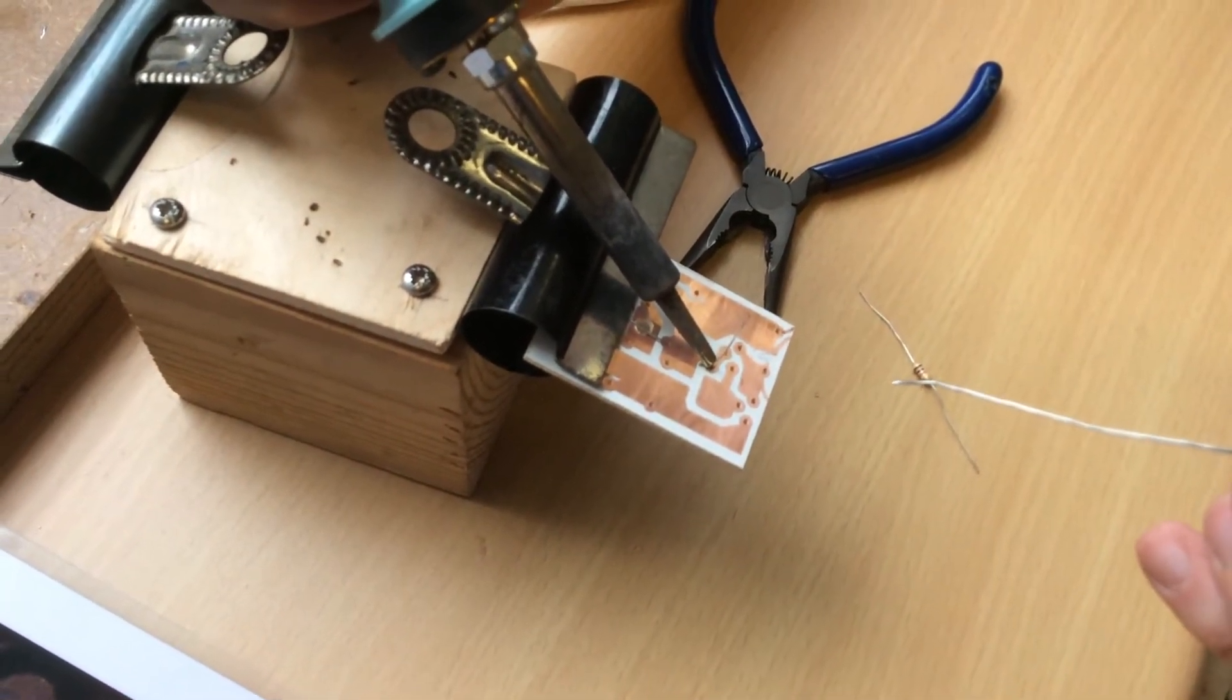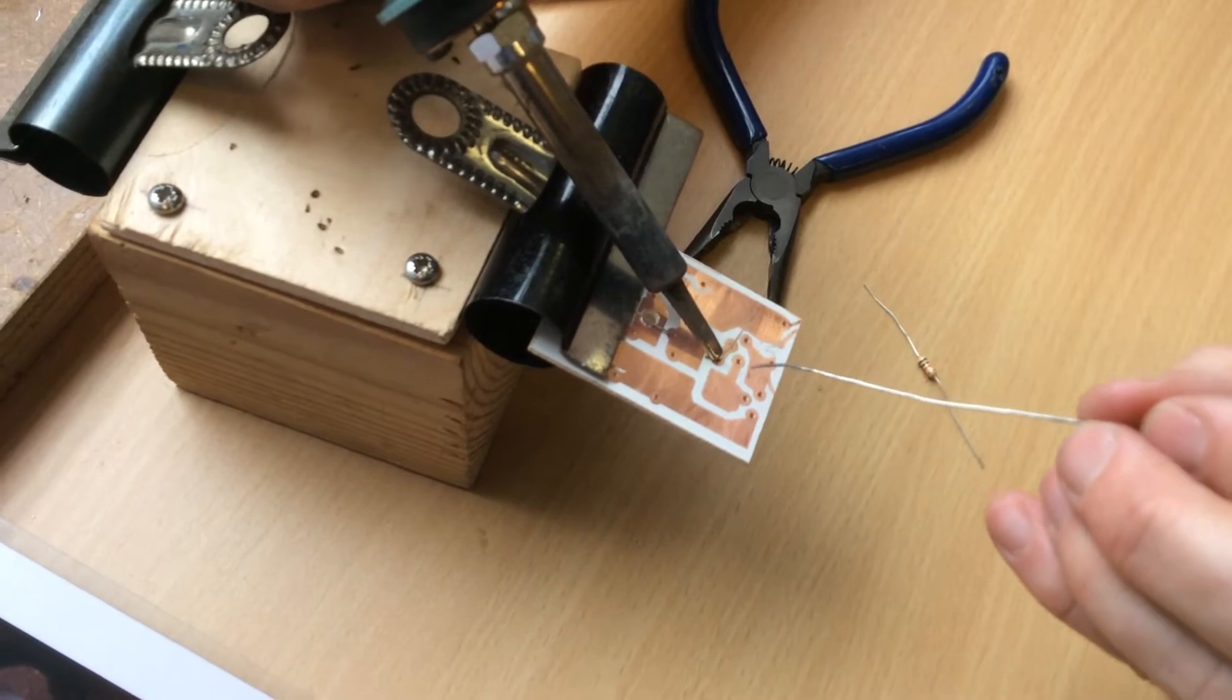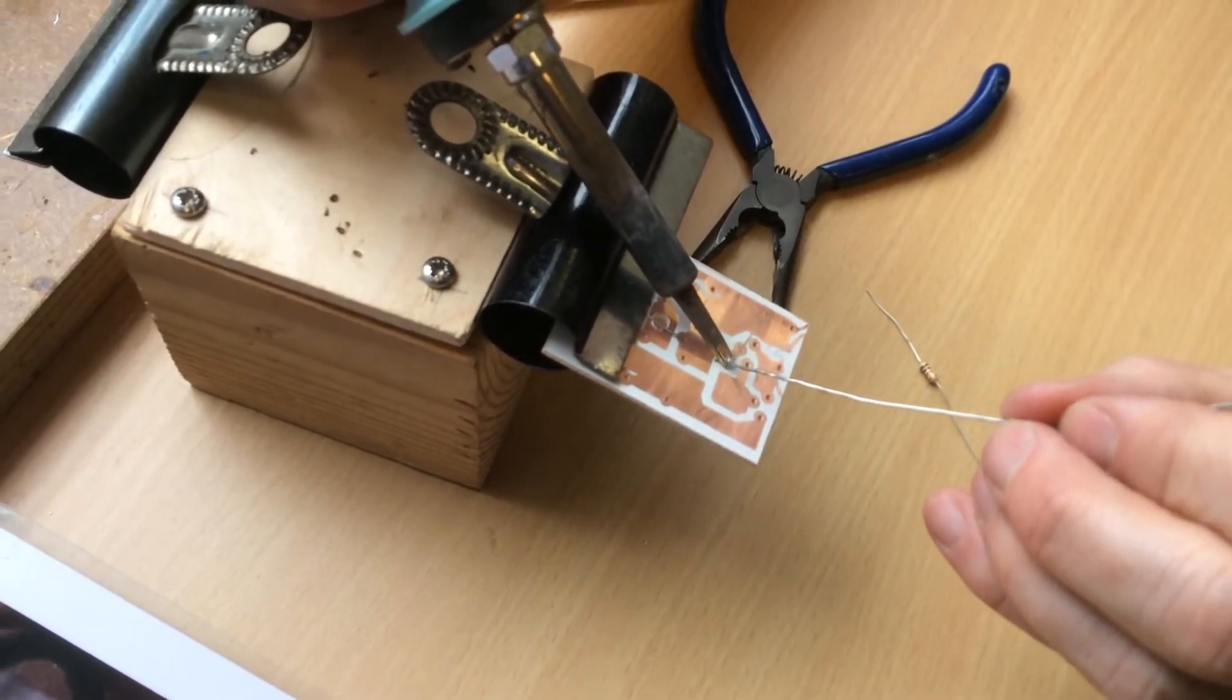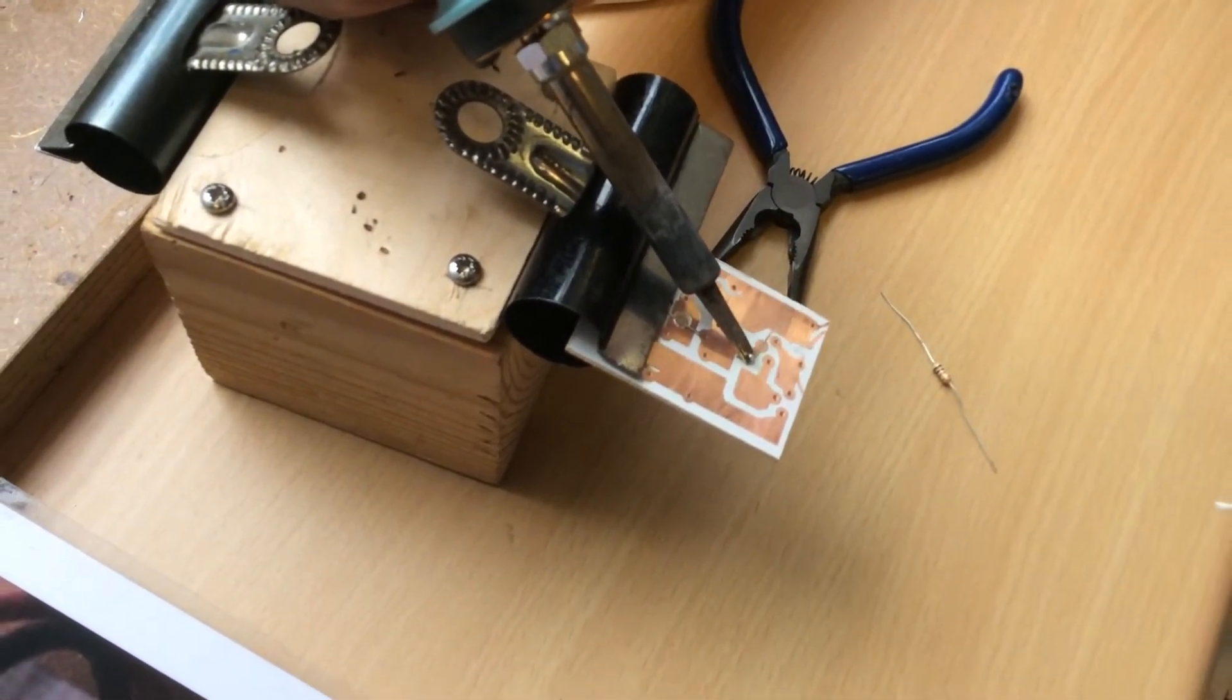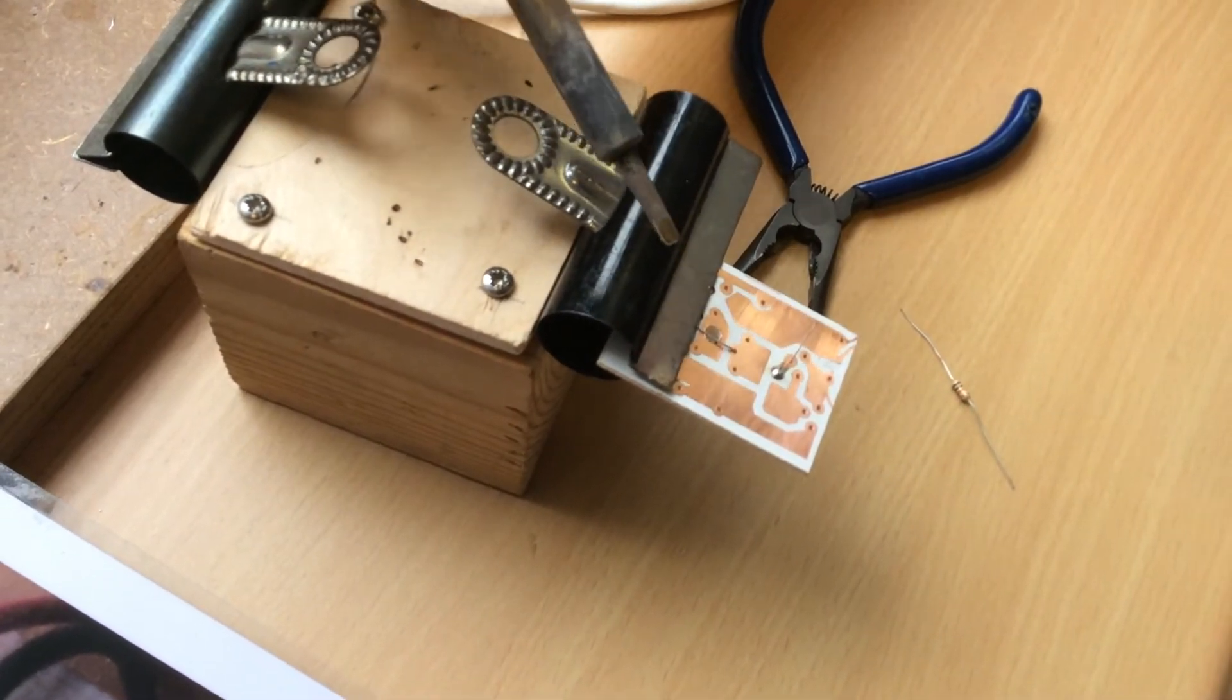One Mississippi, two Mississippi, three Mississippi. Melt some solder on, take the solder away, then take the iron away. It should make like a volcano.